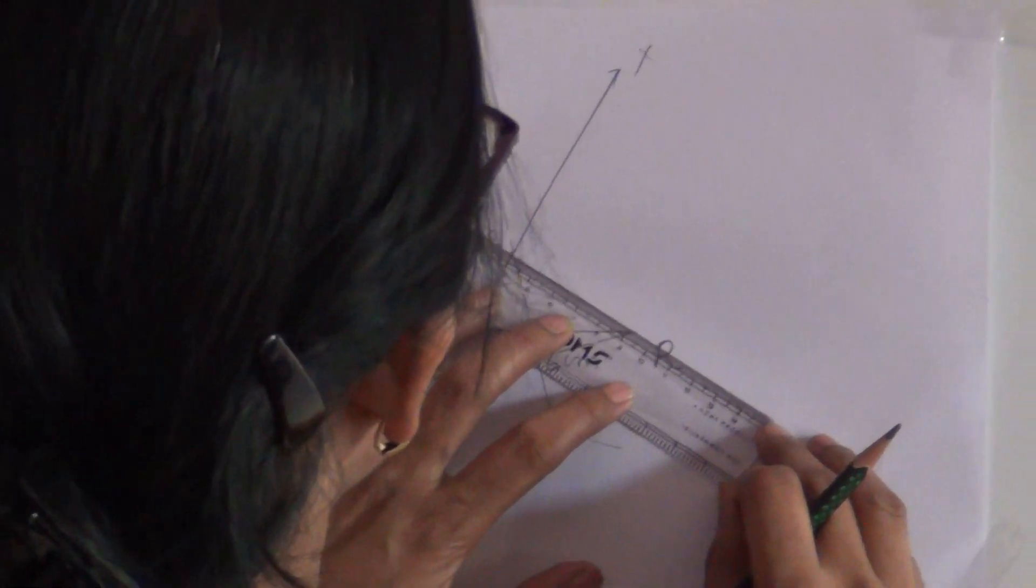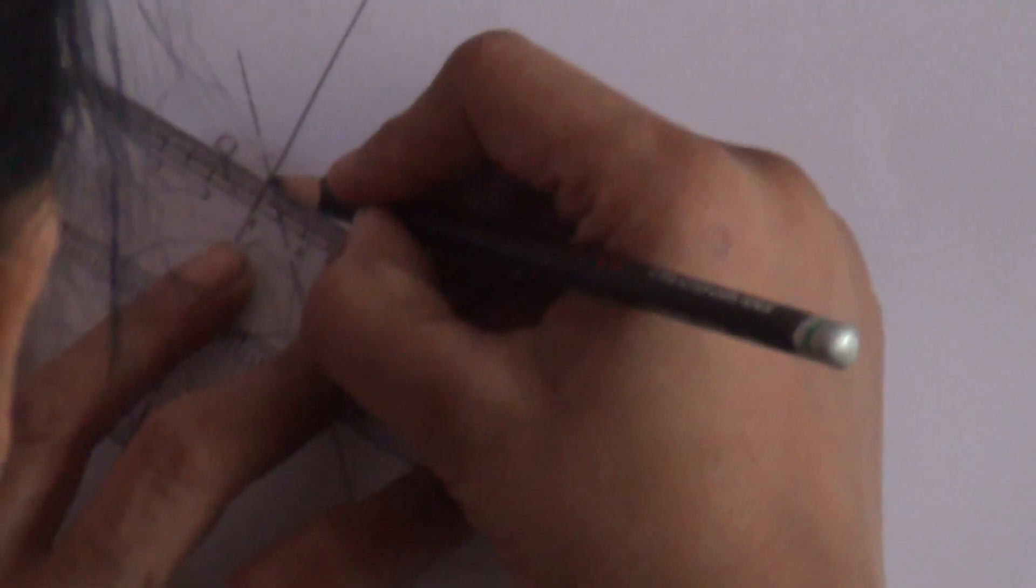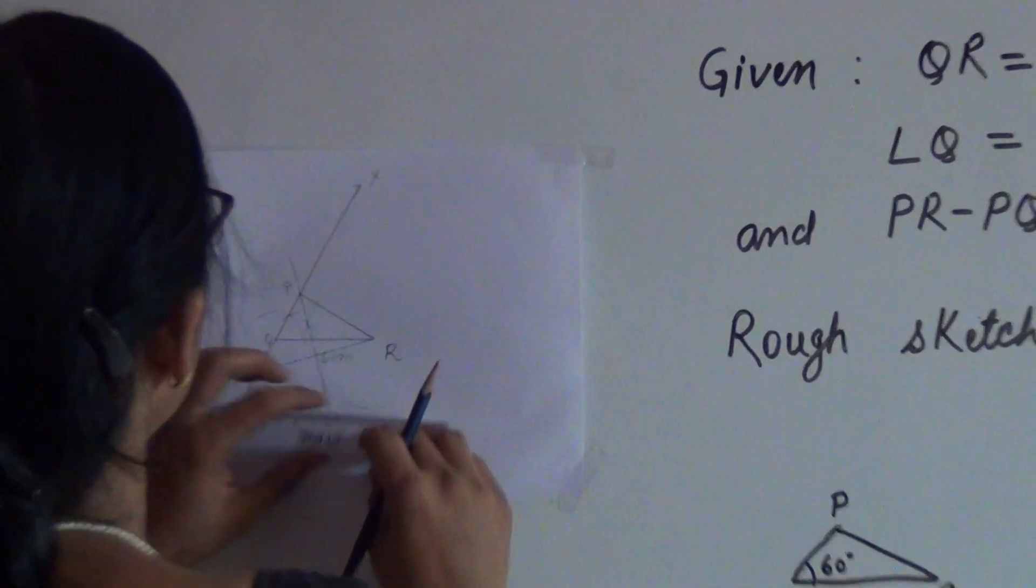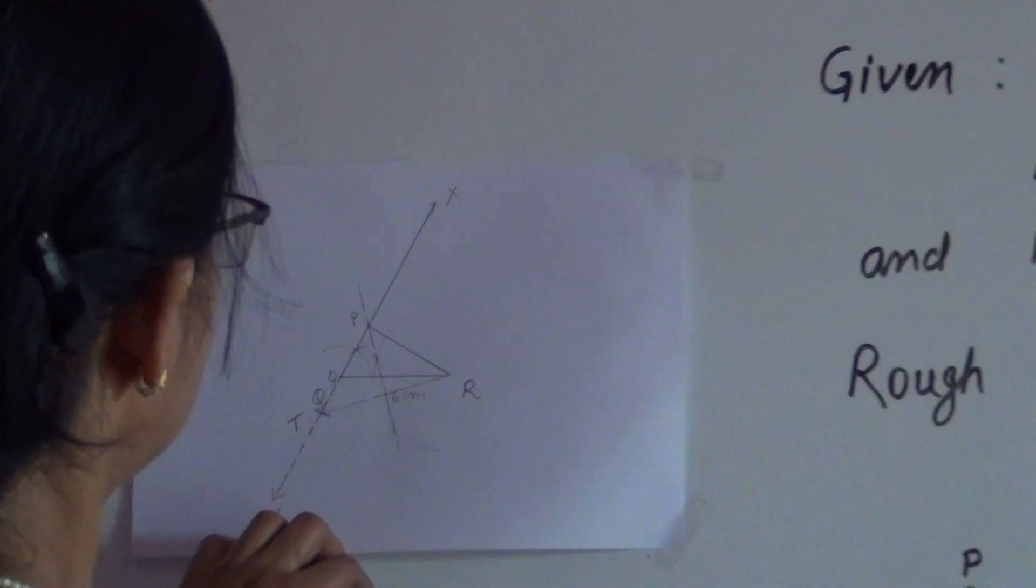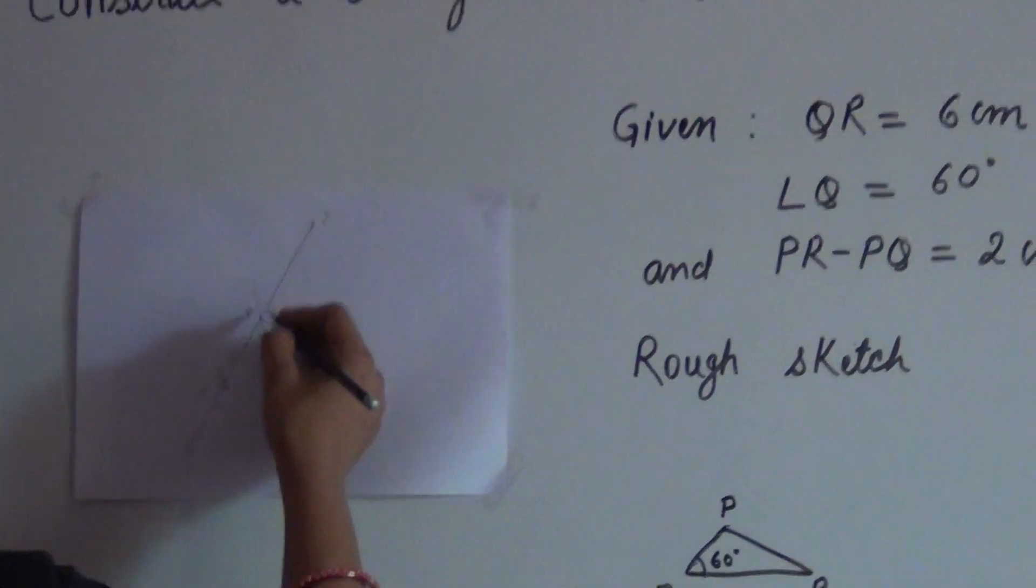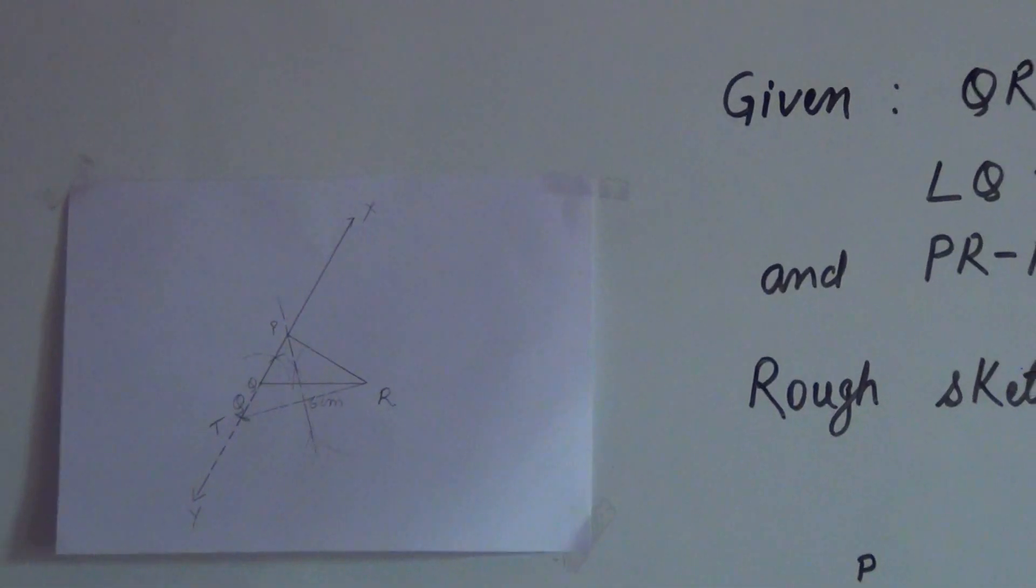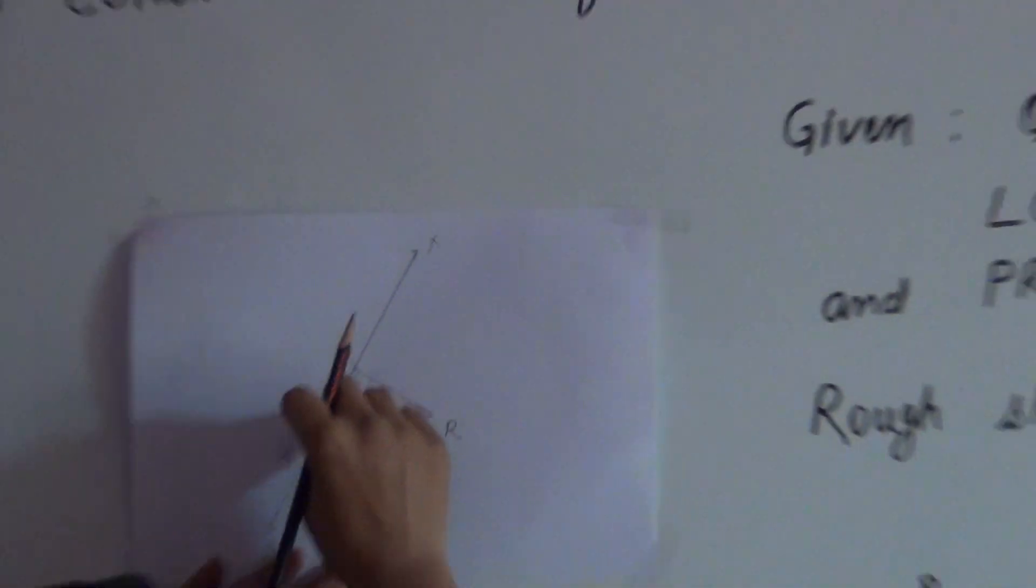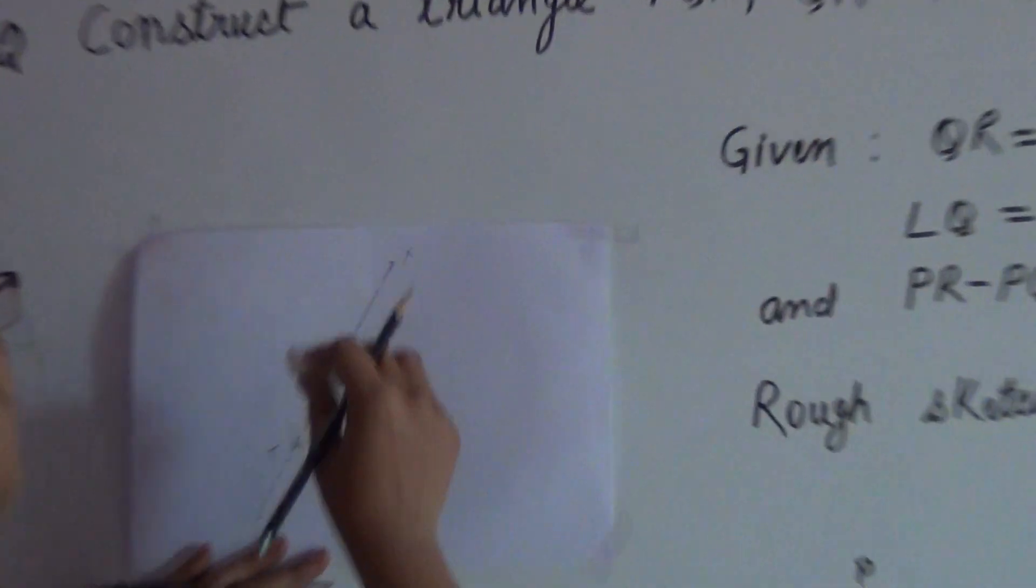Now, as we have got P, we will join it to R. Now this is PR. We have got the side PR, so PQR. I am erasing this Q, children. You will get confused because here it is. This point is actually T, and here it is Q.